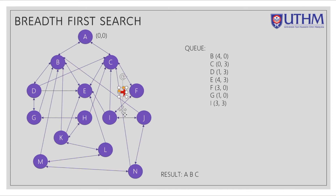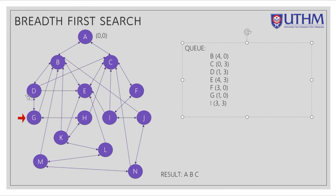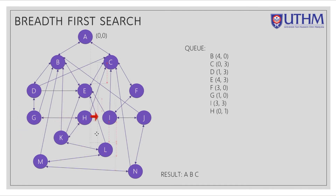After F, we go to G. For state G at (1,0), it is connected to D and H. We already have D, so we queue up H. Looking at G's current state (1,0), for H we use the transfer method, transferring 1 liter into the other jug, resulting in (0,1).